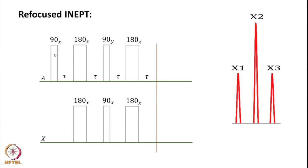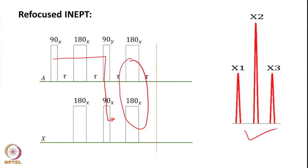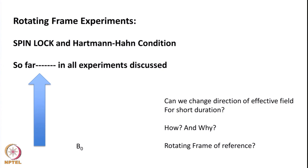In refocused INAPT, same as INAPT we start with a 90-degree pulse, then apply simultaneous 180-degree pulses. Then we do a spin echo — tau, 180, tau — and because of that all lines which were previously some negative, some positive are now all positive. This refocused INAPT removes the problem associated with INAPT. We then looked at how we can transfer magnetization from A nuclei to X nuclei — proton to carbon — using a concept called cross polarization.